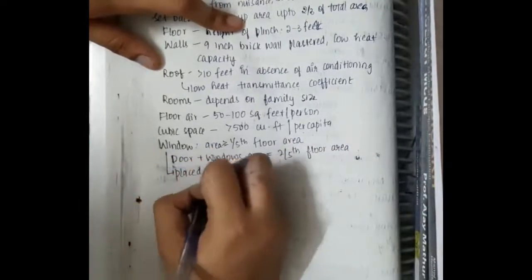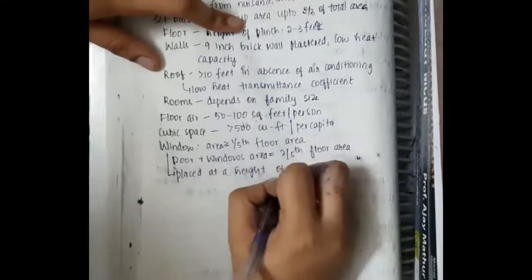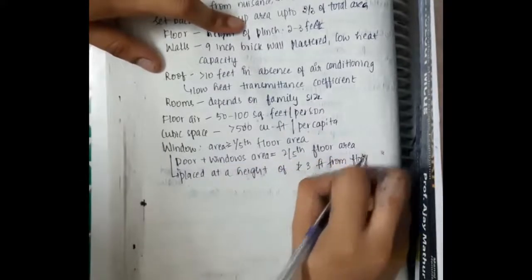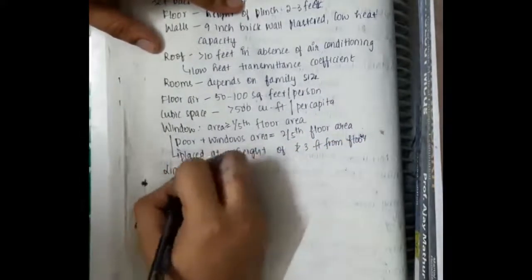Windows along with doors should be equal to 2 5th. And windows should be placed at a height of more than 3 feet from floor.